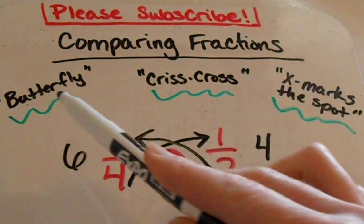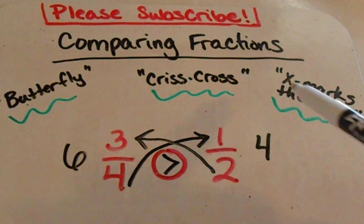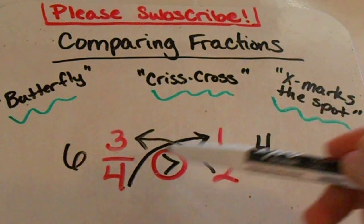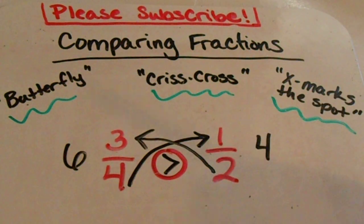So as you can see, this is where I got the crisscross name or x marks the spot. Some people call it the butterfly because the way that they write it looks like butterfly wings.